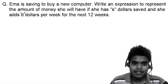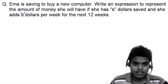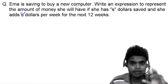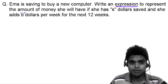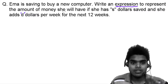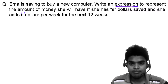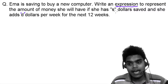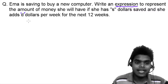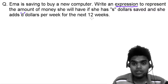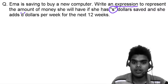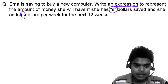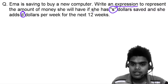The question is saying: Emma is saving to buy a new computer. Write an expression to represent the amount of money she will have if she has S dollars saved and she earns D dollars per week for the next 12 weeks. She already has S amount of dollars, and every week she is saving D dollars for the next 12 weeks.